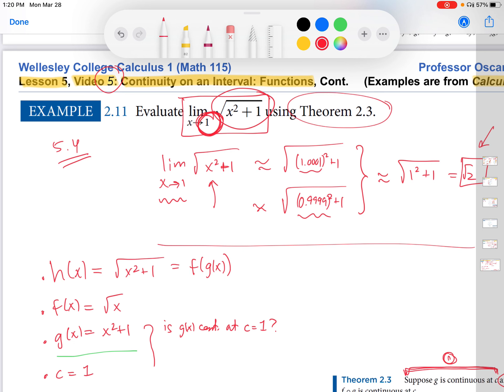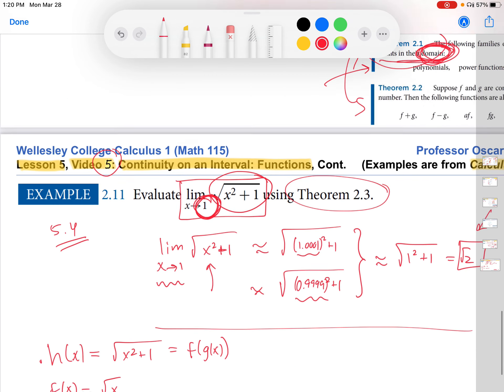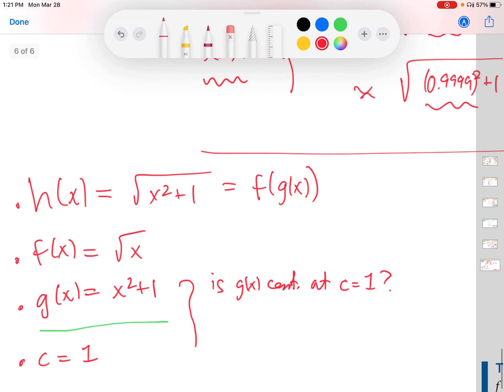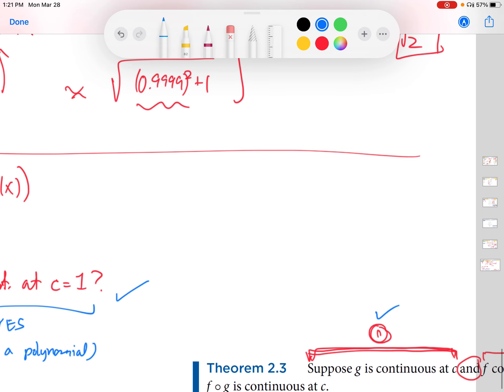One of those theorems, I'll scroll up here. This was theorem 2.1, told us that if the function is a polynomial, which g of x is, then it's continuous at all points. Because the domain of polynomials is all real numbers. So c is definitely one of those real numbers. So the conclusion is, yes, g is continuous at c equals 1. And I'll just write in parentheses because it's a polynomial and is therefore continuous at every c value, including one. So we have satisfied the first hypothesis in the theorem.